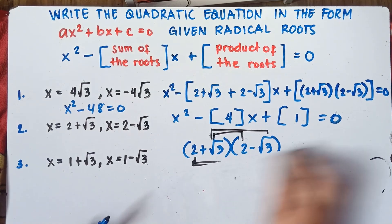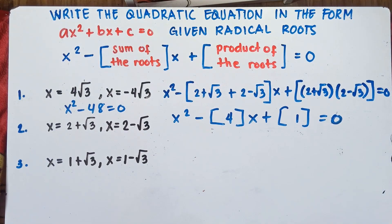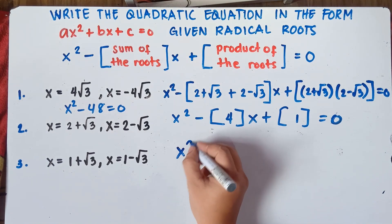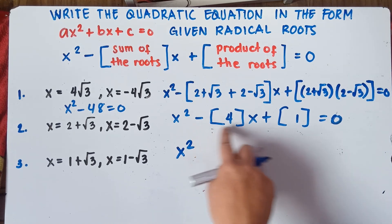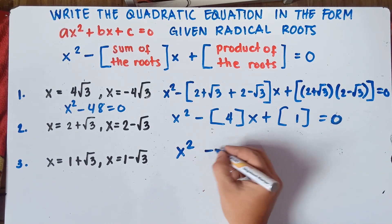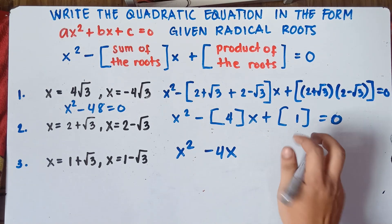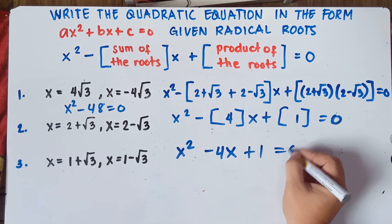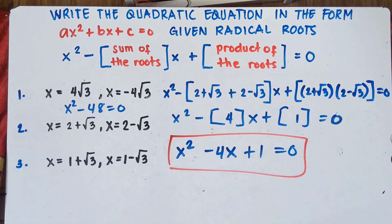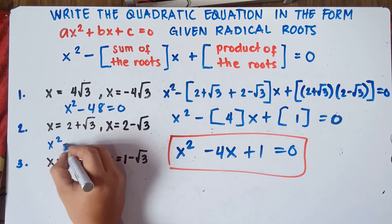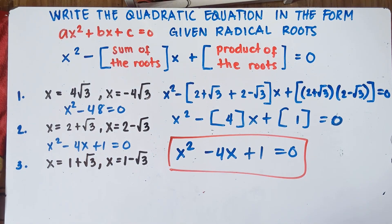Our final answer will be: copy x squared, negative times positive 4 is negative 4, times x — that would be negative 4x. And then positive times positive 1, that's positive 1, equals 0. That's it, class. This will be your answer for number 2. x squared minus 4x plus 1 equals 0.